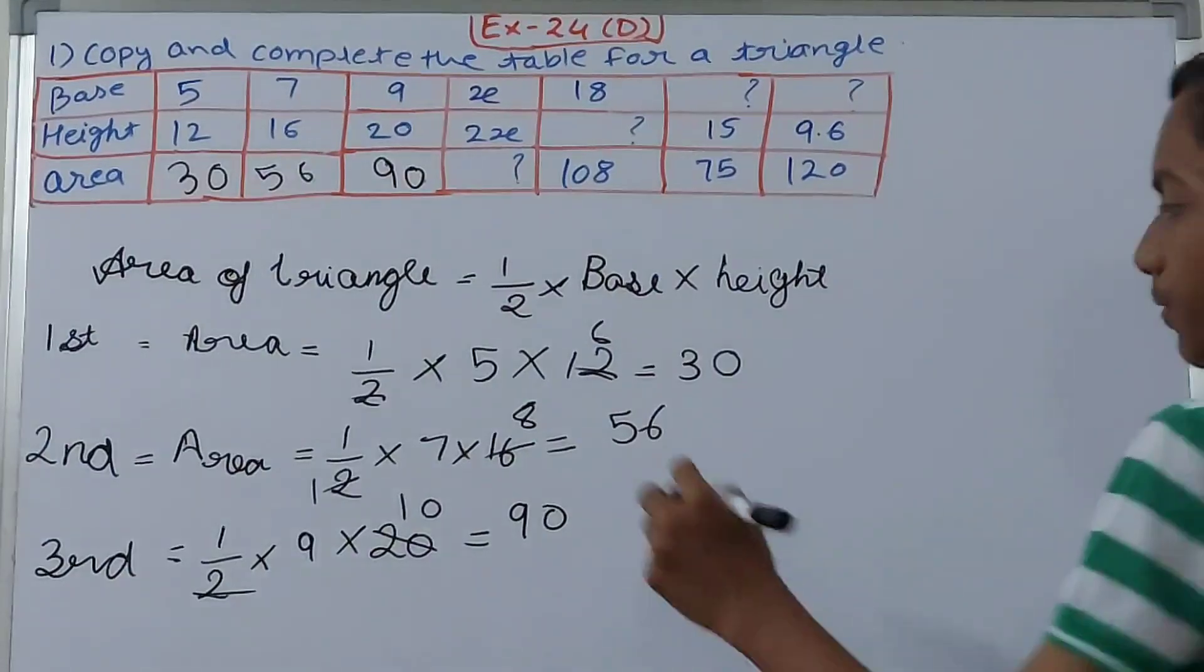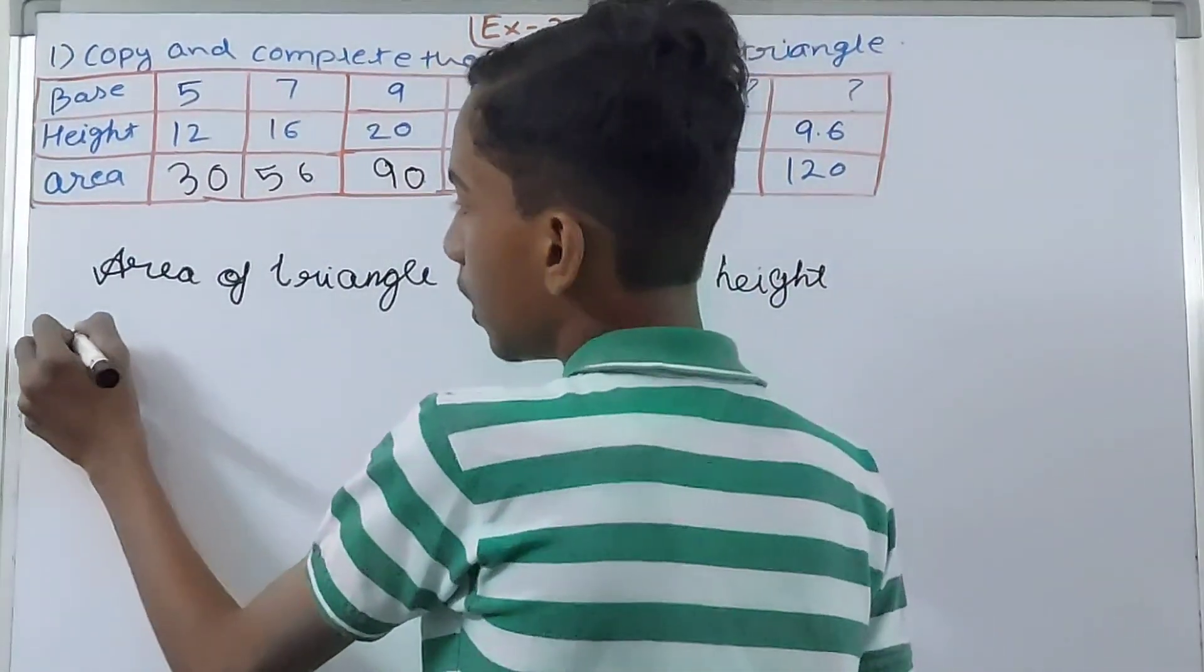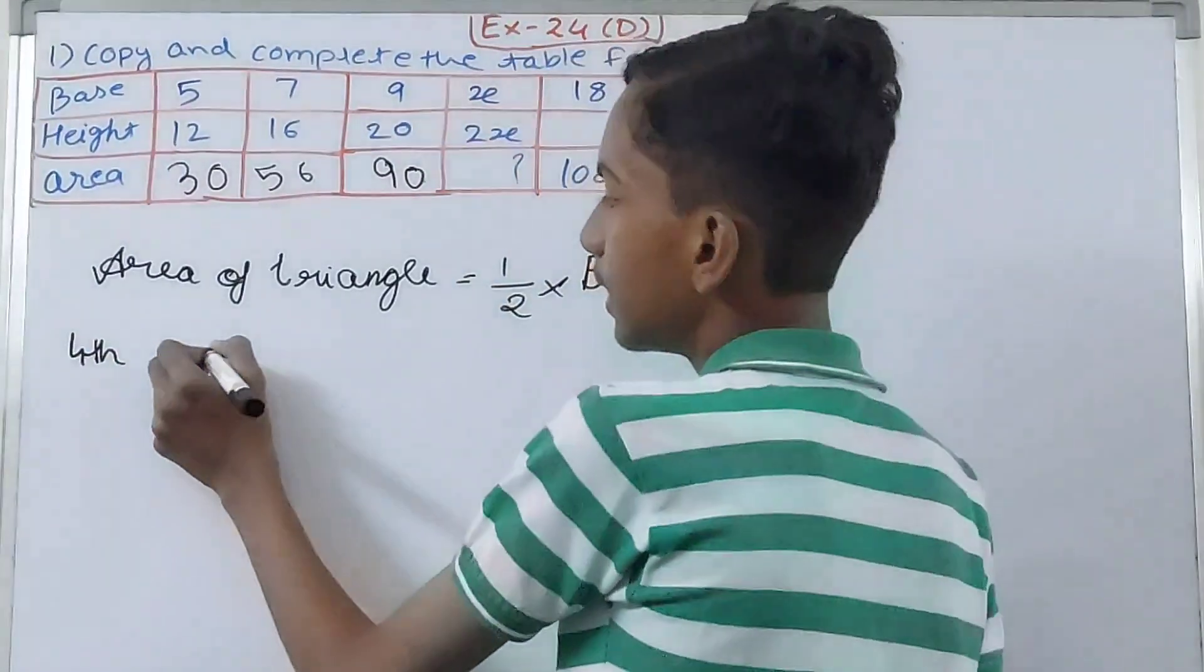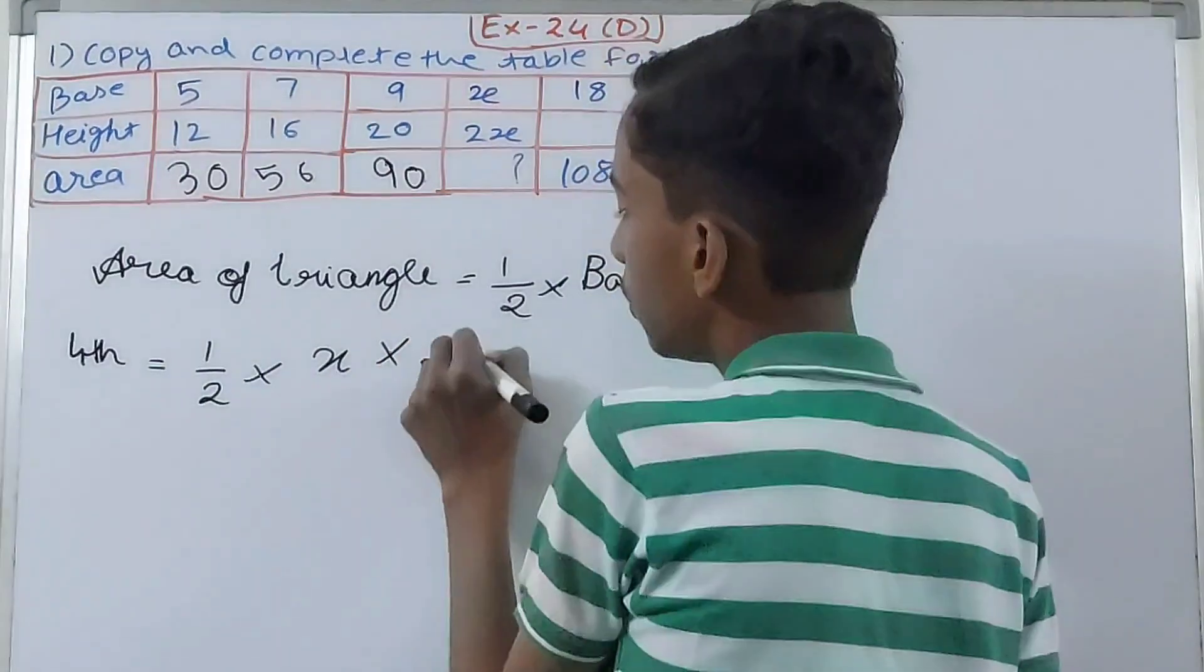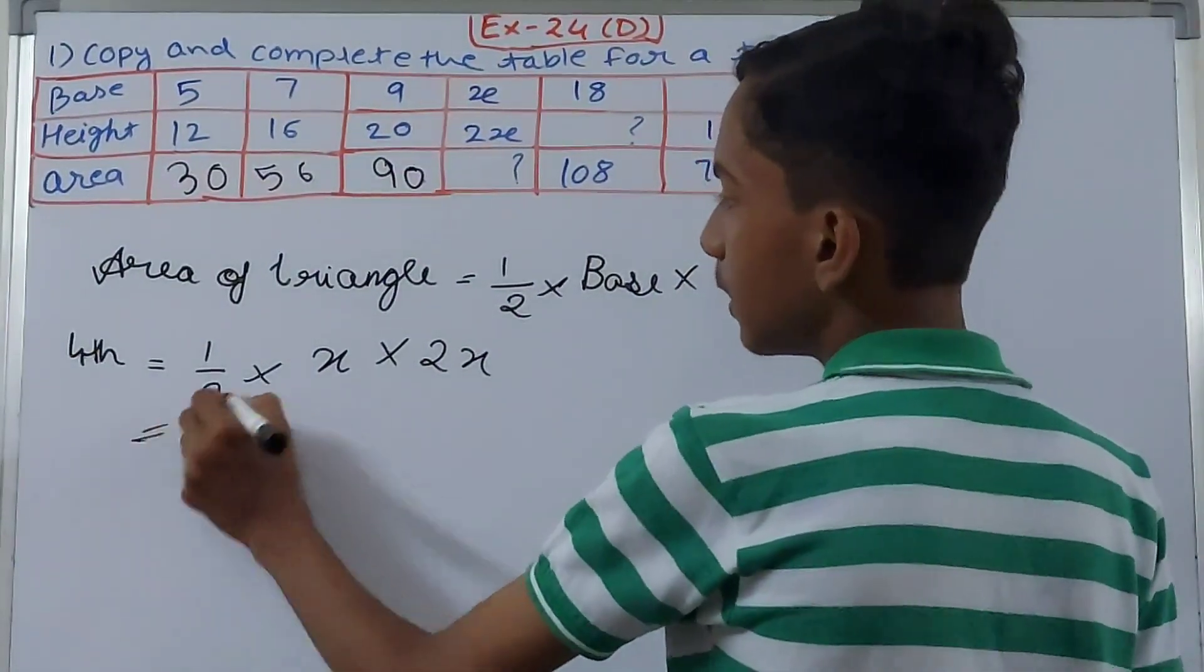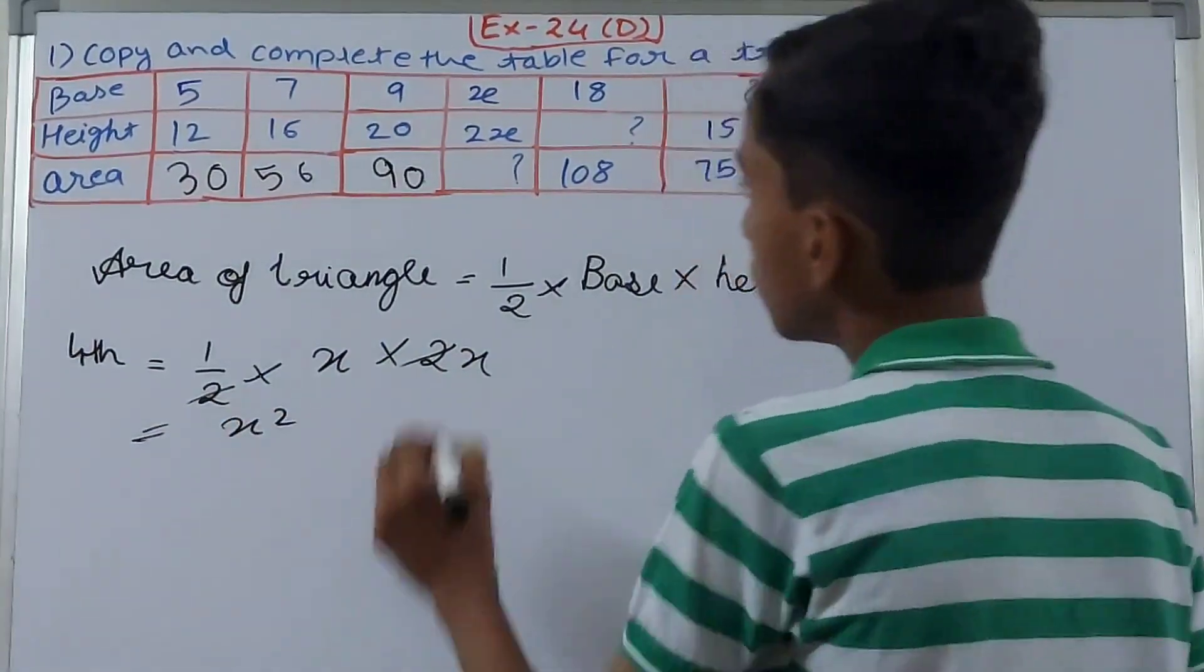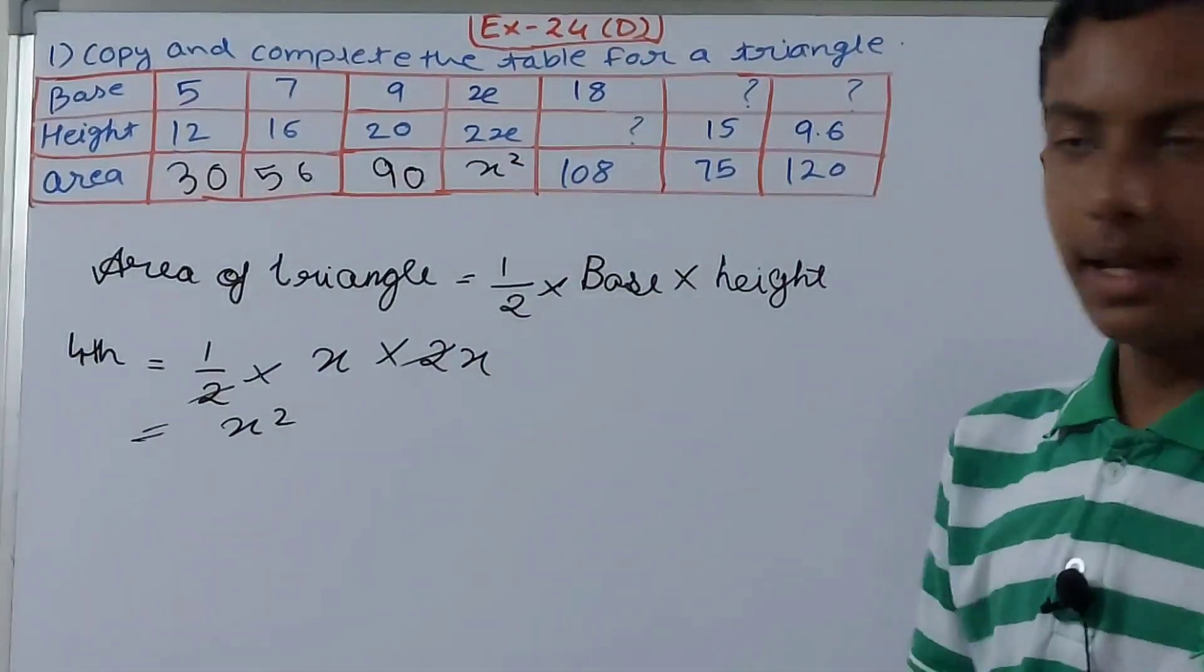Now we move on to the fourth one. Area equals 1/2 into x into 2x. The 2 and 2 cancel each other, so x squared. The area here becomes x squared.